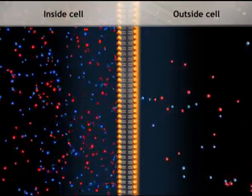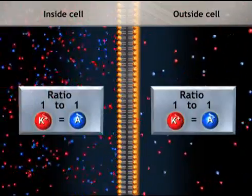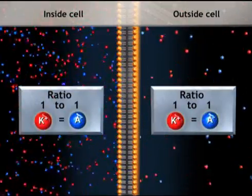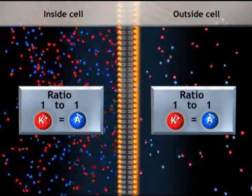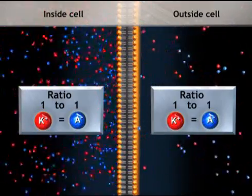Despite the difference in salt concentration, the ratio of potassium ions to anions on each side of the membrane equals 1, and the membrane potential is equal to 0 millivolts.